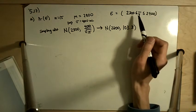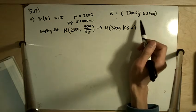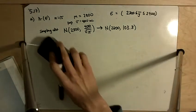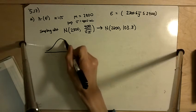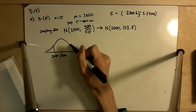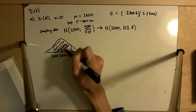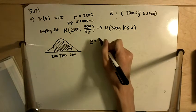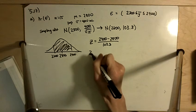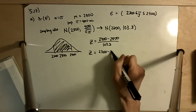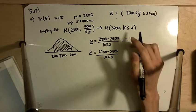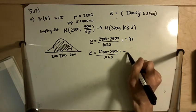E is within 100 units of the population mean. Drawing a picture: the normal curve is centered at 2800, going down to 2700 and up to 2900. We calculate Z equals 2900 minus 2800 divided by 103.3, and the other Z is 2700 minus 2800 divided by 103.3. This gives positive 0.97 on the right and negative 0.97 on the left.